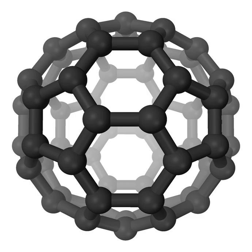The reaction is: 2 Al (alloy) + AlCl₃ (gas) → 3 AlCl. It then disproportionates into aluminium melt and aluminium trichloride upon cooling to 900 degrees Celsius.